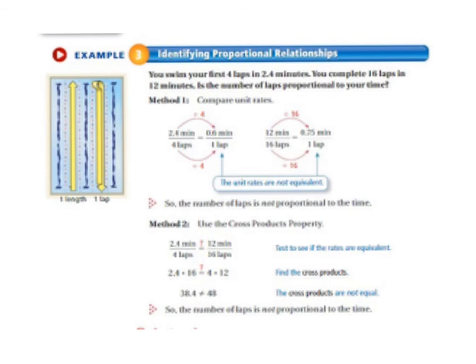you can compare the unit rates. So 2.4 we're dividing by 4 because to make that 4 into 1 you have to divide by 4 so if you do that to the bottom you have to do the same thing to the top. And so that gives you 0.6 minutes per lap.